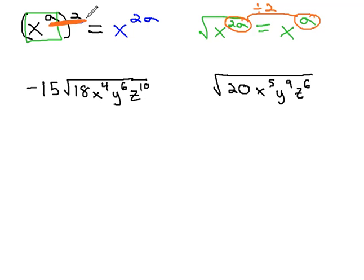Let's take a look at how this would work out with a couple examples. First, in this problem, we have negative 5 times the square root of 18, x to the 4th, y to the 6th, z to the 10th.